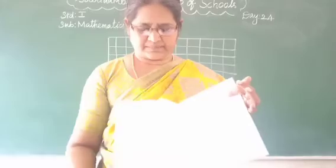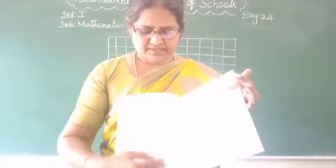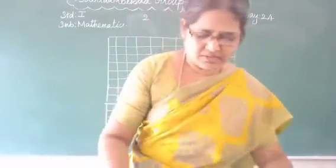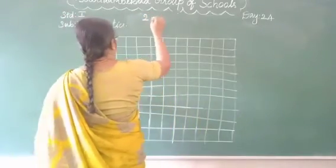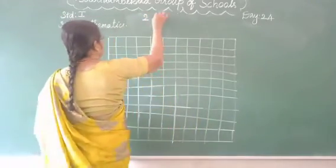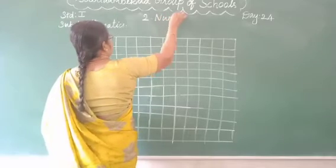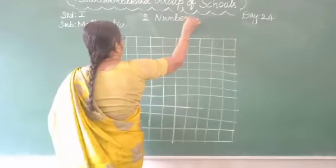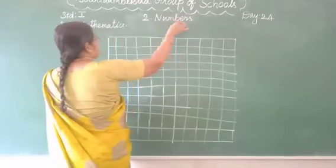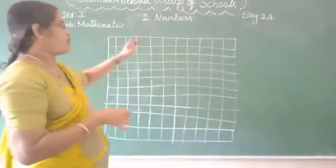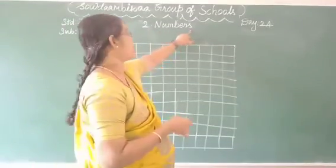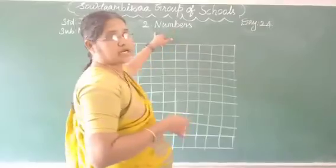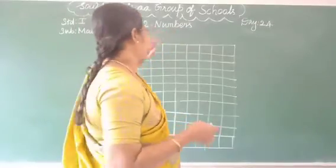Turn this page. You will write. Okay. Number two — numbers. N, U, M, B, E, R, S. Follow me: N, U, M, B, E, R, S. Numbers. Now spell and write. Okay.